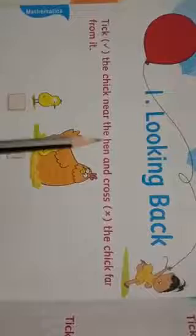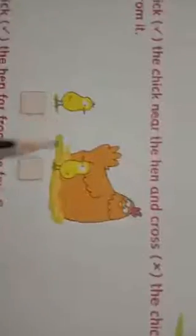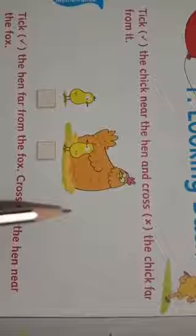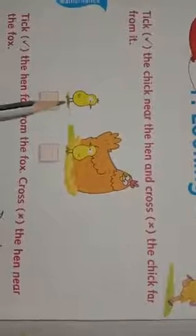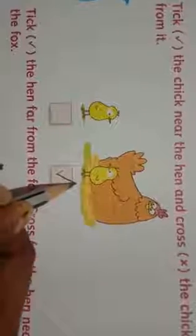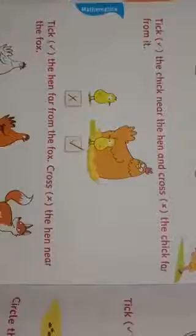Take the chick near the hen and cross the chick far from it. Here we have a picture, this is a hen and these are two chicks. So you have to tick the chick near the hen and the chick far from it, so cross it. This chick is near to hen, so tick it. And this chick is far from it, so cross. In this way you have solved these remaining examples.